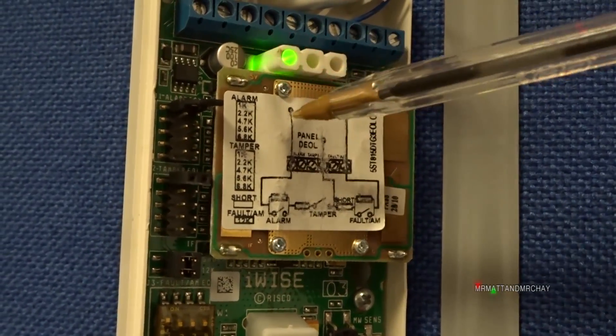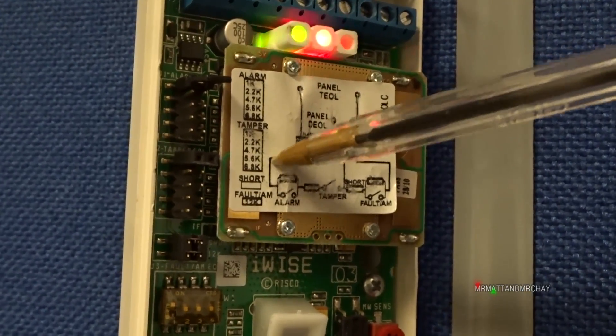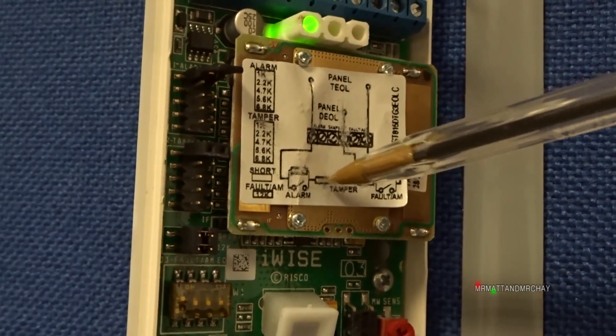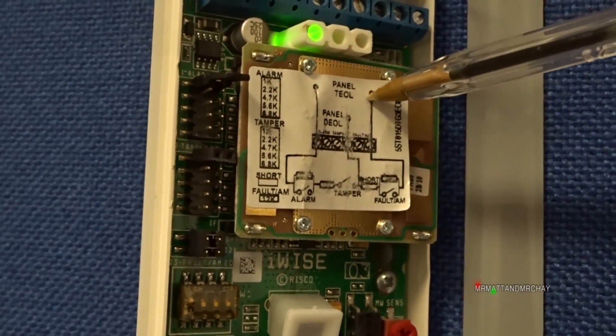If the detector detects motion, then this resistor here is un-bypassed. So it comes down here. It reads this one - 1k. Reads this one - 2k. Bypassed. Back to the control panel. 2k is alarm, 1k is clear.